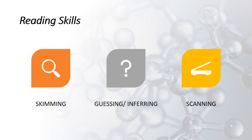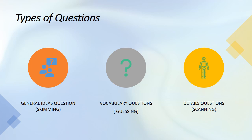Now let's move on to reading skills. We have discussed the strategies; now we move to the skills. There are three reading skills: skimming, guessing, and scanning. Skimming means getting a general idea about the text — reading the title, subtitles, highlighted items, and pictures without focusing on specific information. Guessing means inferring the meaning of something from context. Scanning means looking for specific information.